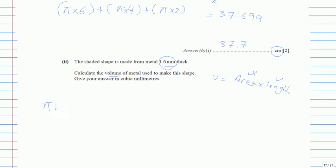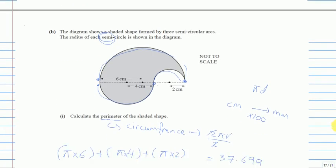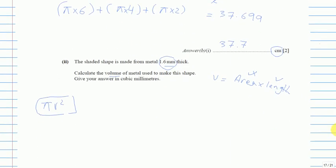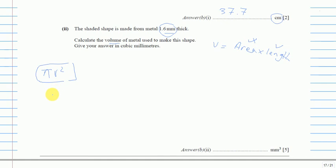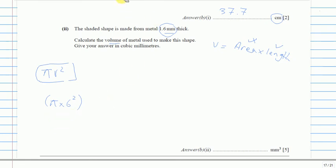Again, πr² is for the whole circle, but we have three semicircles. Let's start with the largest one. You might want to pause and try it yourself, because there is a little trick. The first area is π times 6 squared. The second is π times 4 squared. We will divide everything by 2 at the end since all shapes are semicircles.